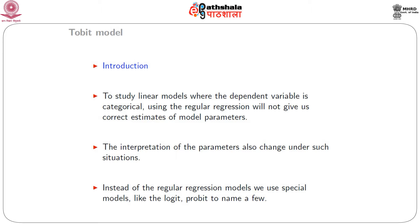When we wish to study a dependent variable as a function of several independent variables — that is, when we want to regress a dependent variable on a number of independent variables — we use a regression model if both the regressors and the regressant are continuous. Sometimes it happens that the dependent variable is dichotomous, meaning it can take on two values: either 0 or 1. In such cases, we must use special models.